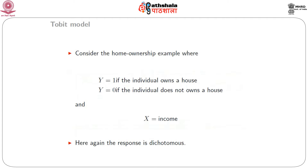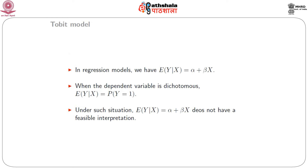Consider the home ownership example: y equals 1 if the individual owns a home and 0 otherwise, where y is the response variable and x is the predictor variable — income in thousands of dollars. In case of dichotomous data, we model the conditional expected mean of y, which is the probability. The expected value of y given x equals the probability that y takes the value 1. In a regression setup, E(y|x) = α + βx, where α is the intercept and β is the slope parameter.